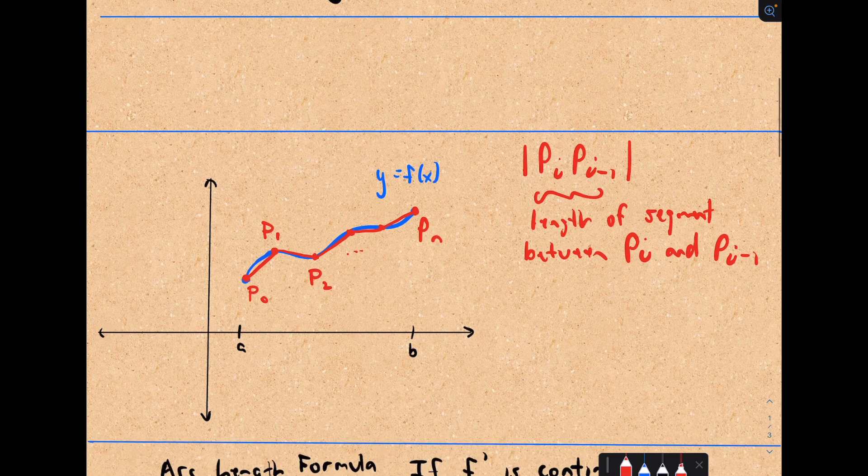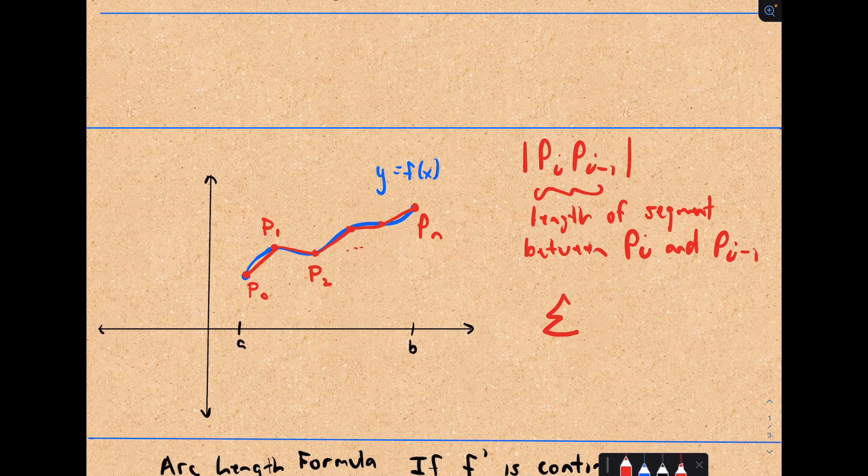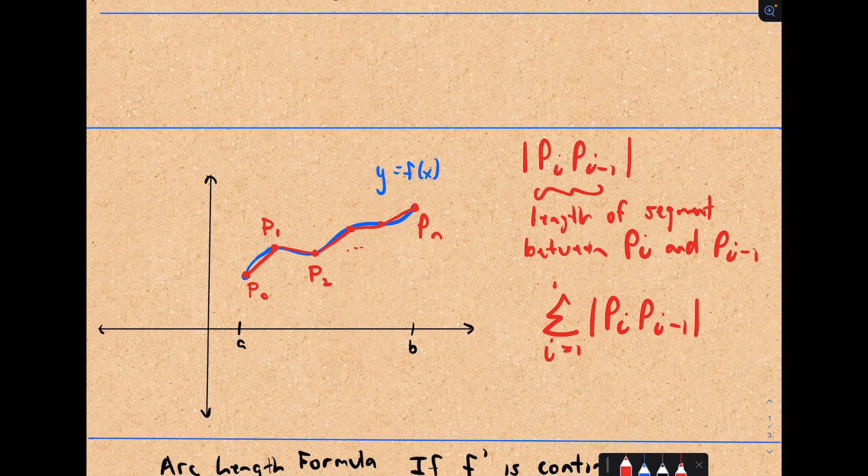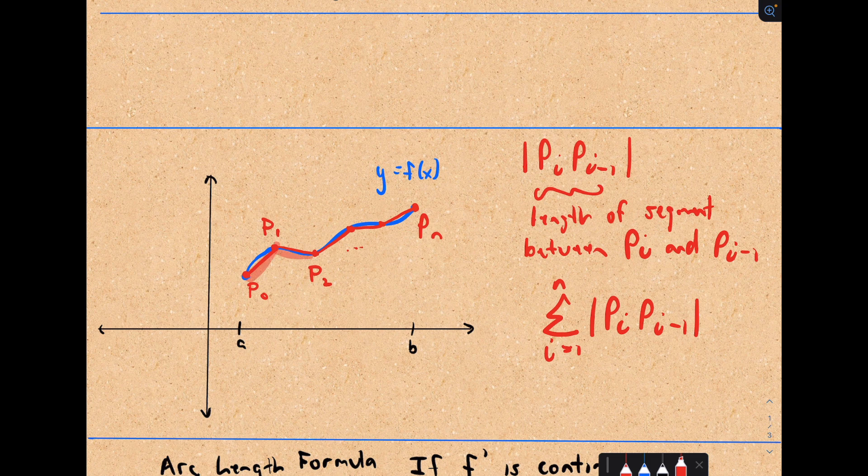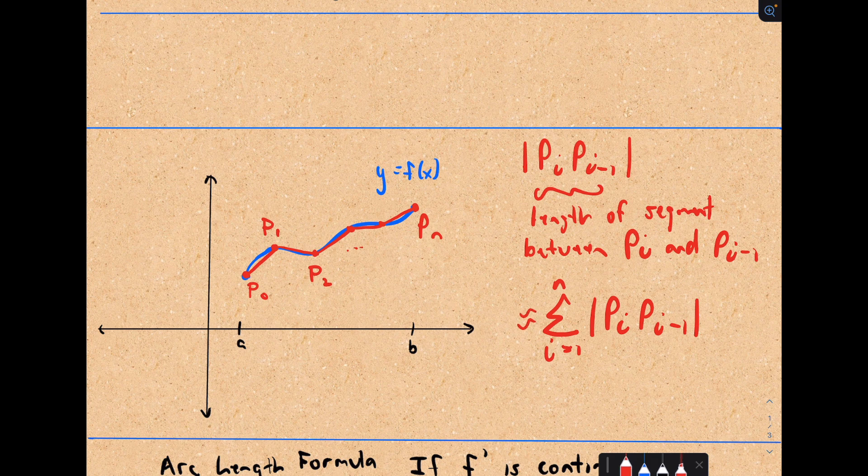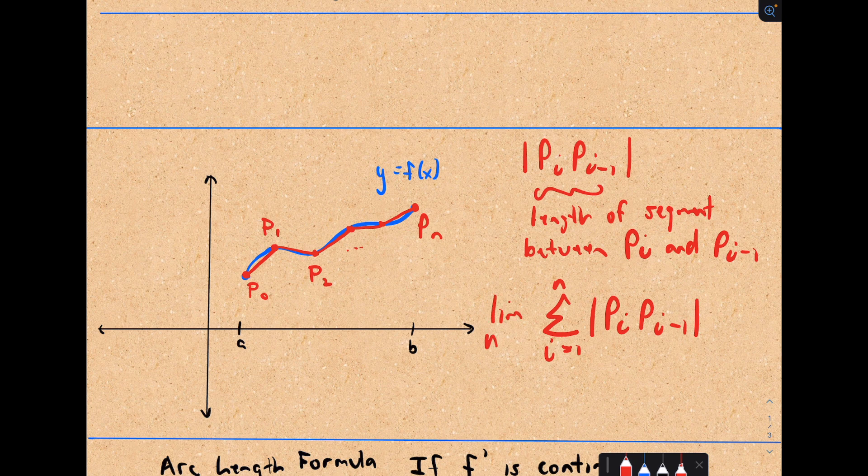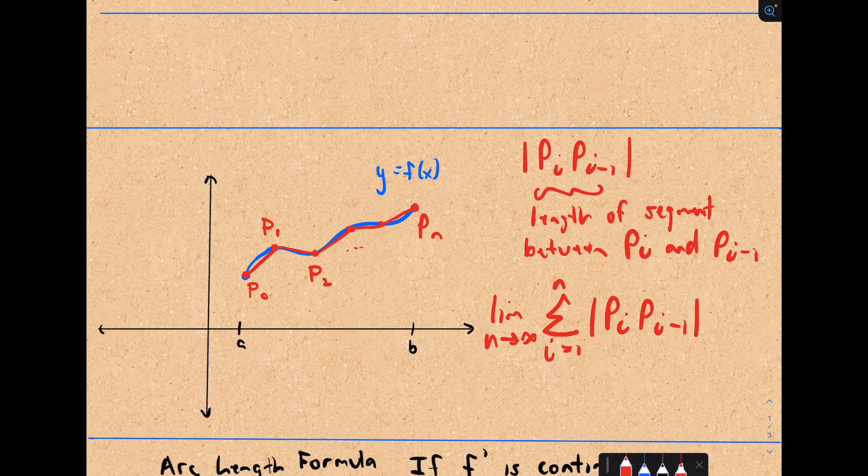If I add all of those segments up, we would have to sum from i equals 1 to n. If I sum up all of those lengths, I'm going to get an approximation to the actual arc length. This would be an approximation to the true arc length. The idea is, if I use more and more of these segments, if I chop them up into more and more pieces, if I take the limit, that's actually going to be equal to the true arc length.